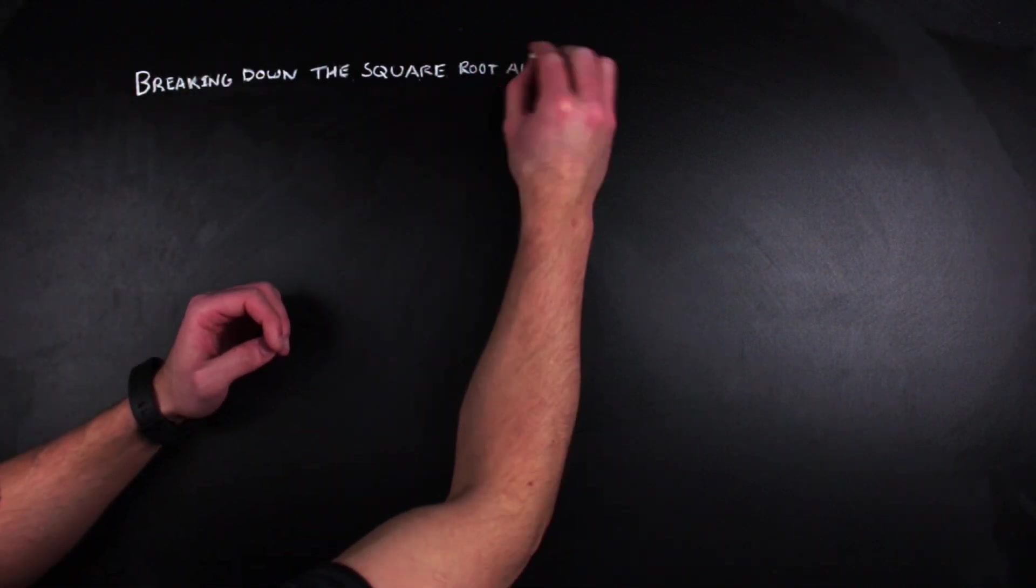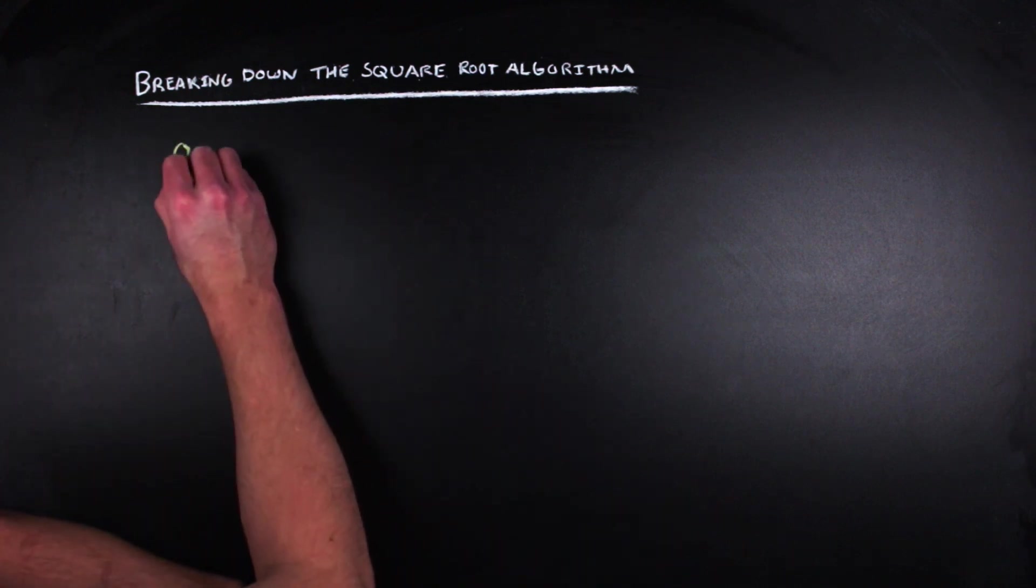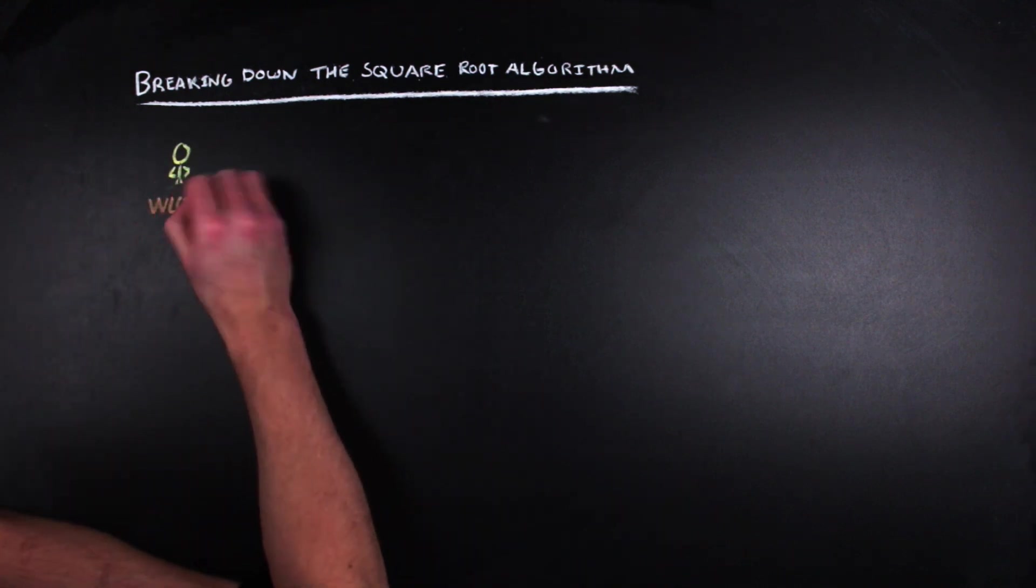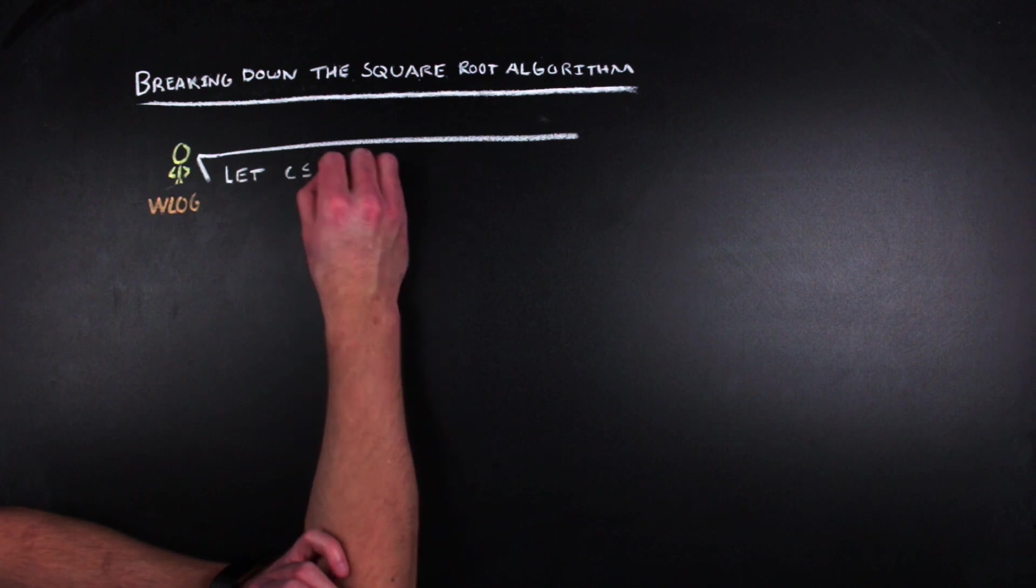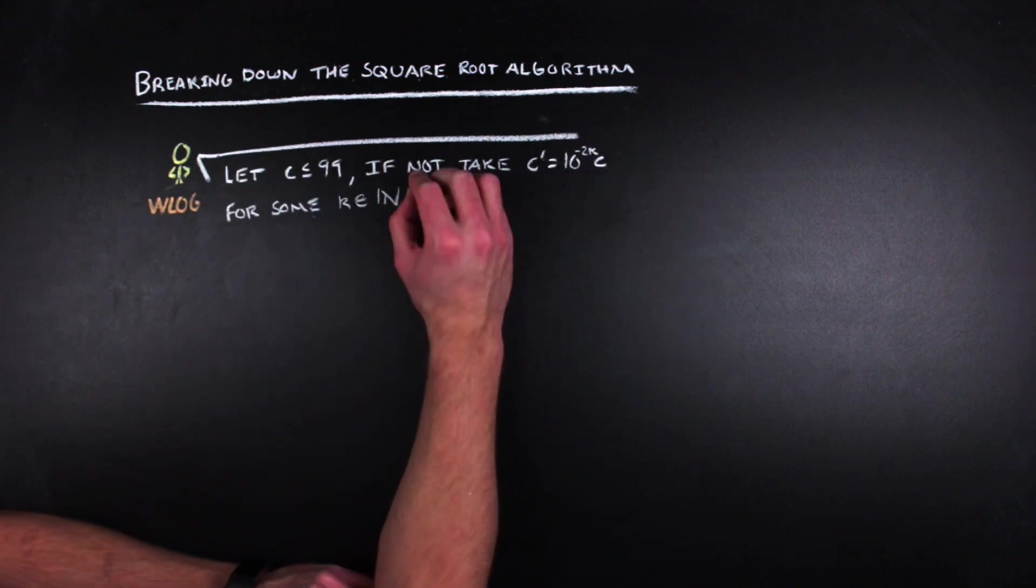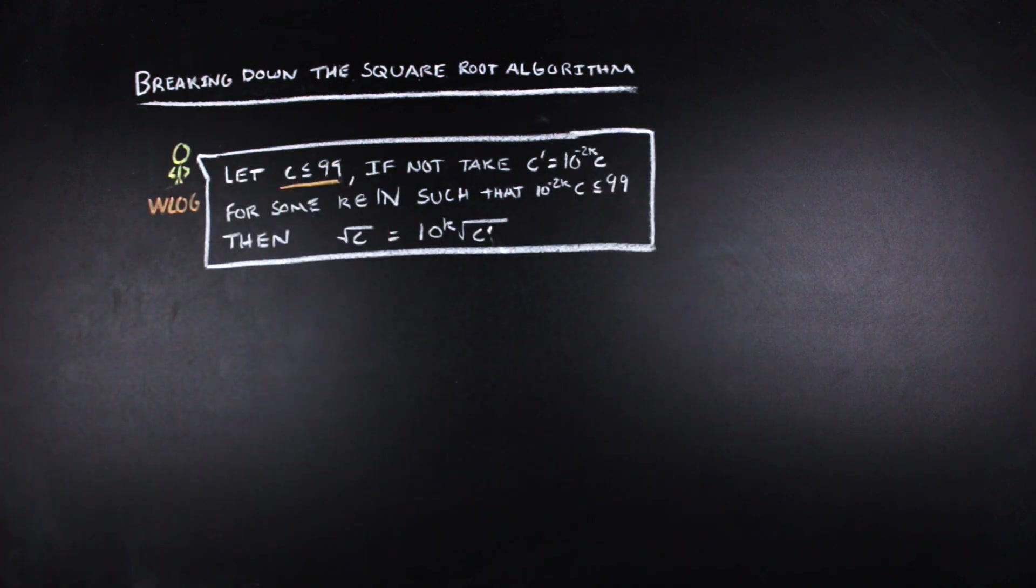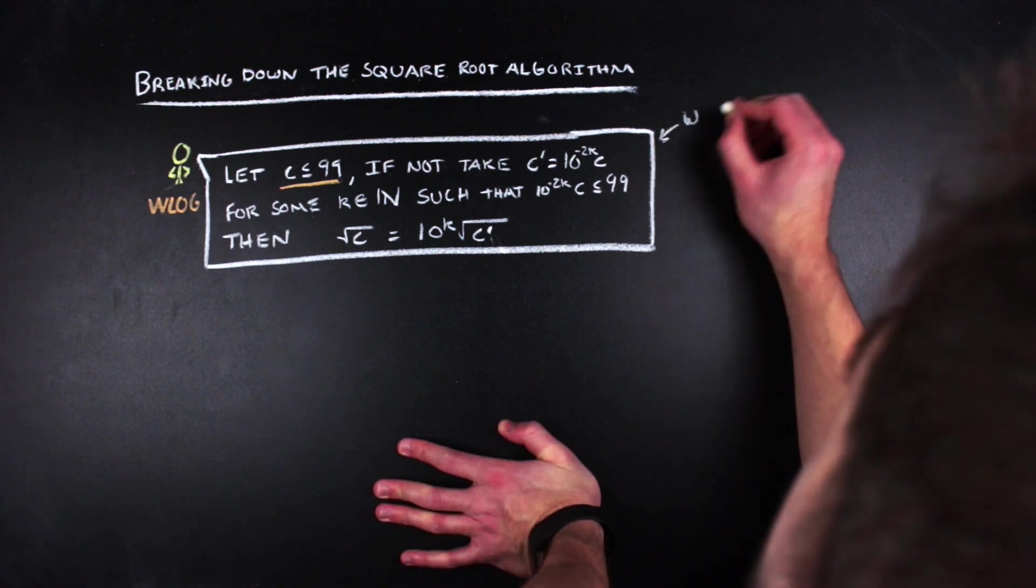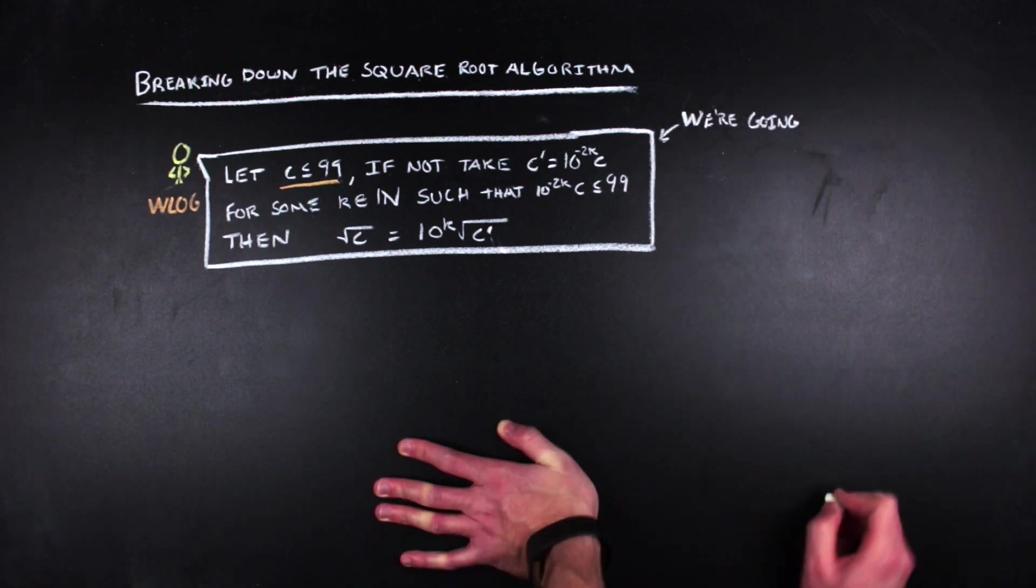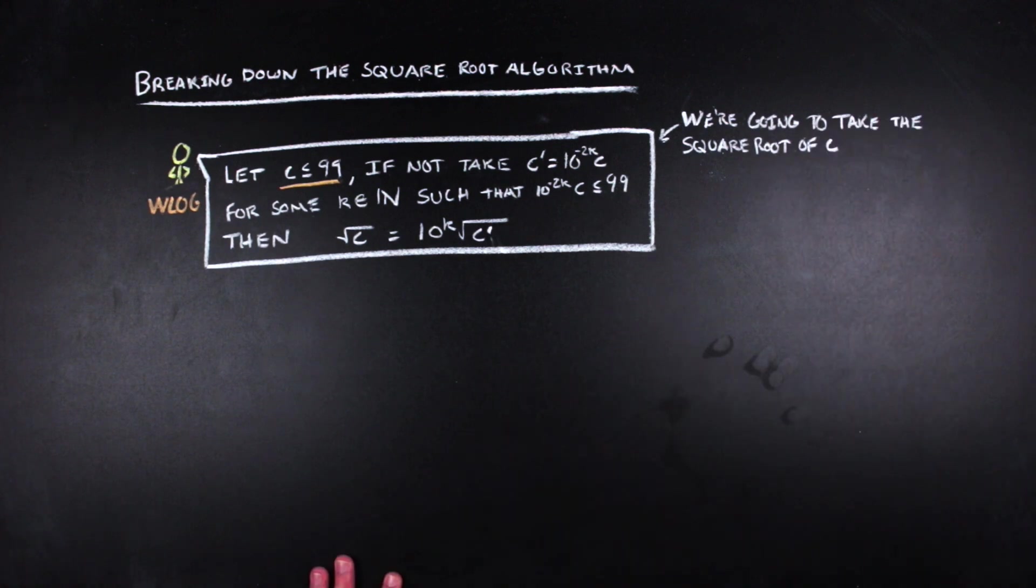We're going to go ahead and let c be the number that we want to find the square root of. Without loss of generality, we can assume that c has at most two digits before the decimal point. If not, then we can apply the algorithm to 10 to the negative 2k times c for some k that makes c fit our criteria, and then we can multiply the result of the algorithm by 10 to the k to get the answer for the original c.